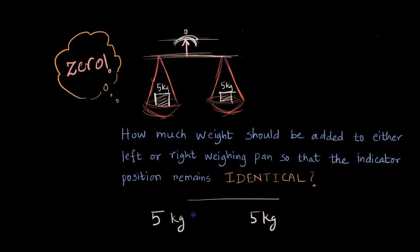Now what we did here is that we added something to the 5 kg on the left which was equal to the weight which was 5 kg on the right and this something was zero. Now this zero is called additive identity.